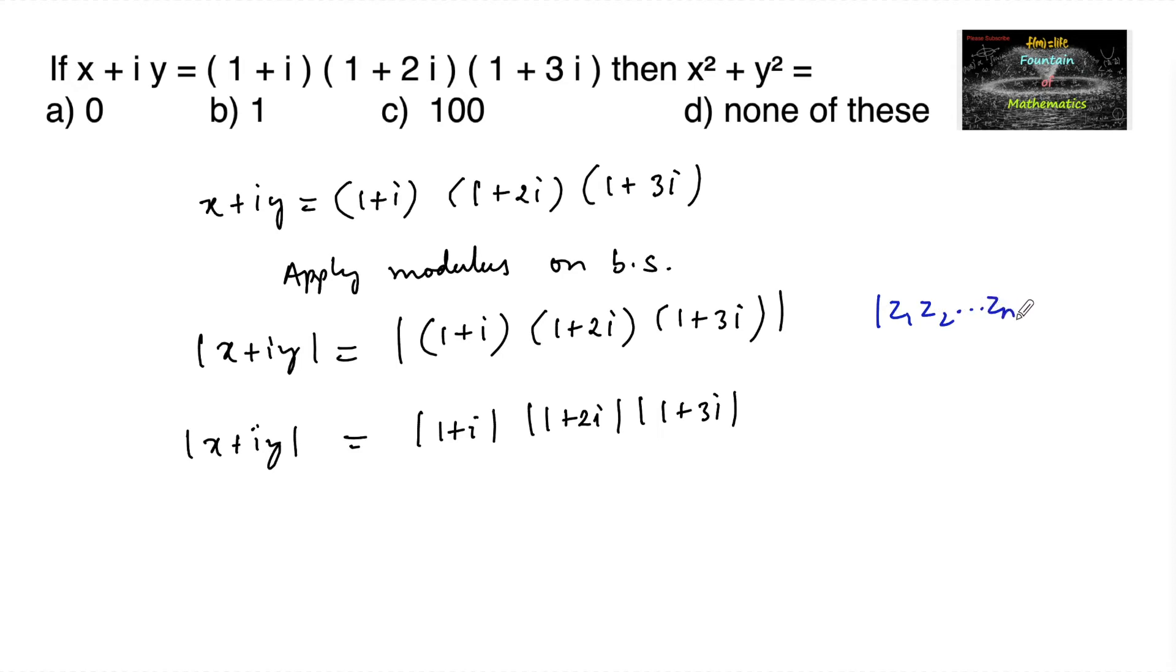z2 and so on, zn product of complex numbers can be written as mod of z1 into modulus of z2 and so on, modulus of zn.